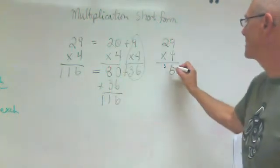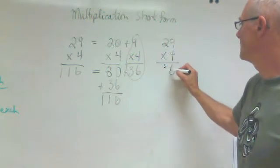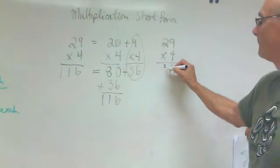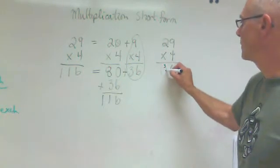Or 4 times 20, which is 80. But we already have 3 there. So this turns into 116.